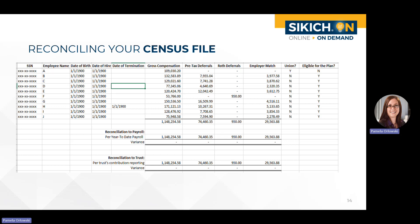What we have on this slide is a very high-level example of a census file and how you can perform that reconciliation. Just for the sake of size, we didn't include all potential fields. One thing I really want to point out is example employee A—this person had compensation during the year but happened to be a union employee and not eligible for this plan. But you can see we still included them, and we made sure our total per the census on these monetary fields agreed to both payroll and trust reporting.